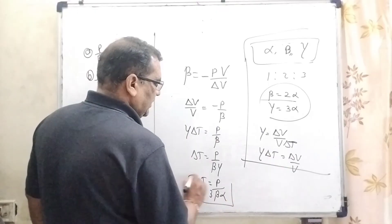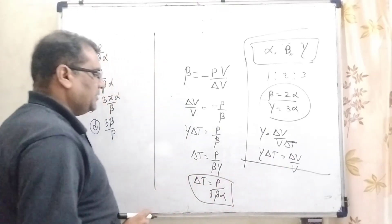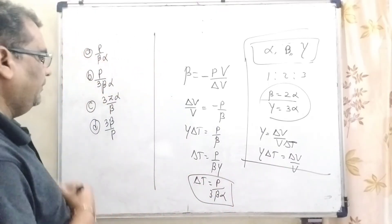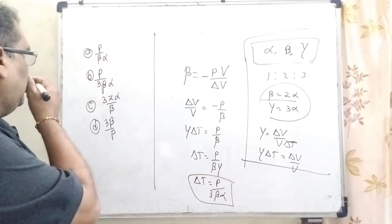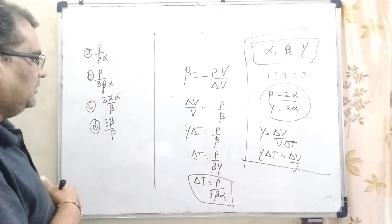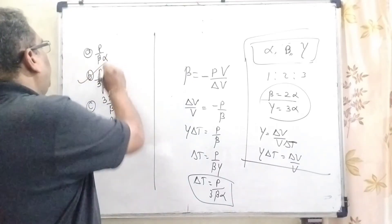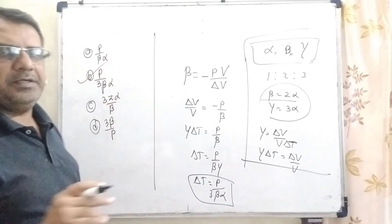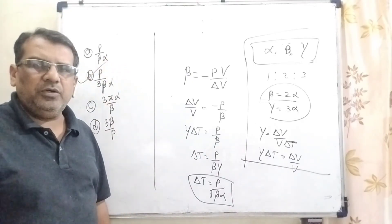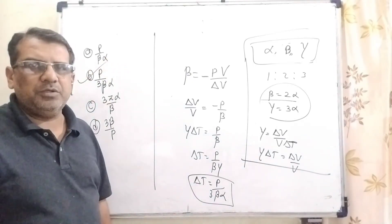Checking the options, ΔT = P/(3βα) matches option B. So option B is correct. I hope you understood this question.